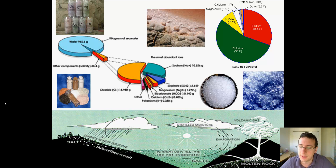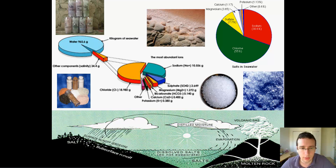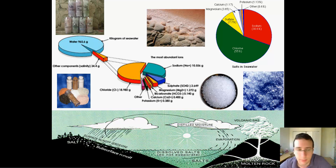There's a lot of stuff dissolved in the water. You need to know the order of abundance: chlorine, sodium, sulfur or sulfates, magnesium, calcium, and then potassium. That's basically the order of the most abundant elements. And then you have to know some of the trace elements, such as gold, zinc, and phosphorus.